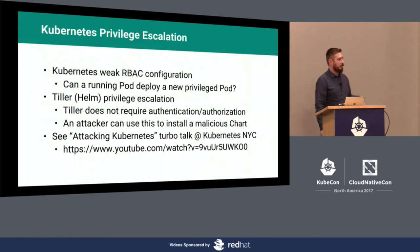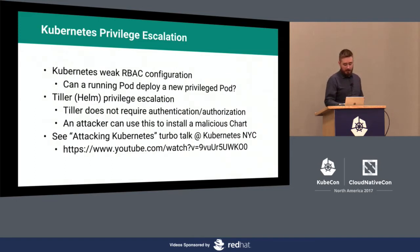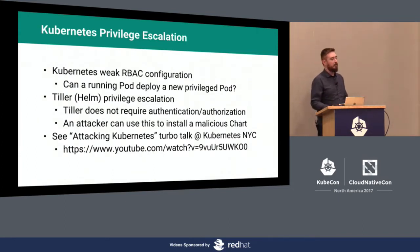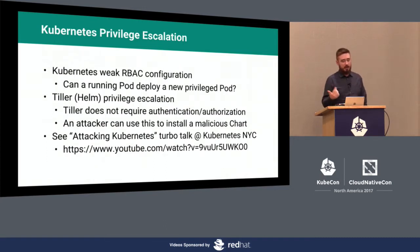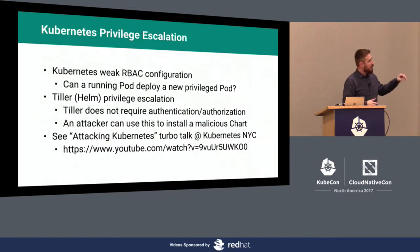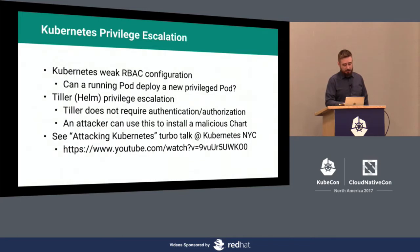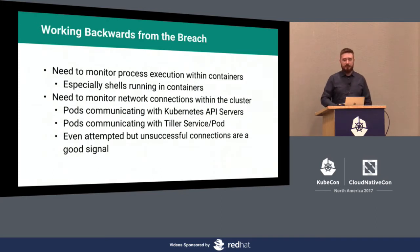Even some tools like kops don't enable RBAC, so basically every container is full cluster root all the time. From that shell, you can download kubectl and start executing stuff — deploy a new pod, deploy a privileged pod, whatever. And if that's fixed and you're using Helm in your cluster, Helm also doesn't require any authentication. You can just talk to the Tiller service and say 'install this chart' and you have full cluster root again. For a live demo, I did a turbo talk at Kubernetes NYC with a YouTube link if you want to see more.